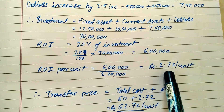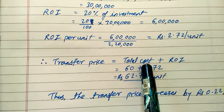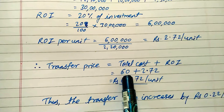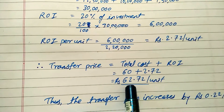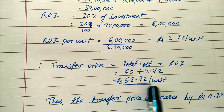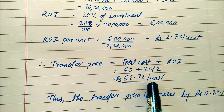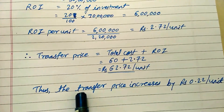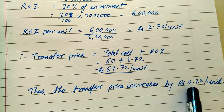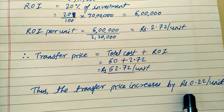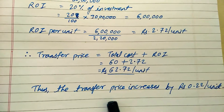For the new transfer price: Total Cost of ₹60 plus ROI per unit of ₹2.72 gives a new transfer price of ₹62.72 per unit. Previously it was ₹62.50 per unit, and now it is ₹62.72 per unit. So because of the changed scenario, the transfer price has increased by ₹0.22 — that is 22 paise per unit — which is the impact of the change in volume.